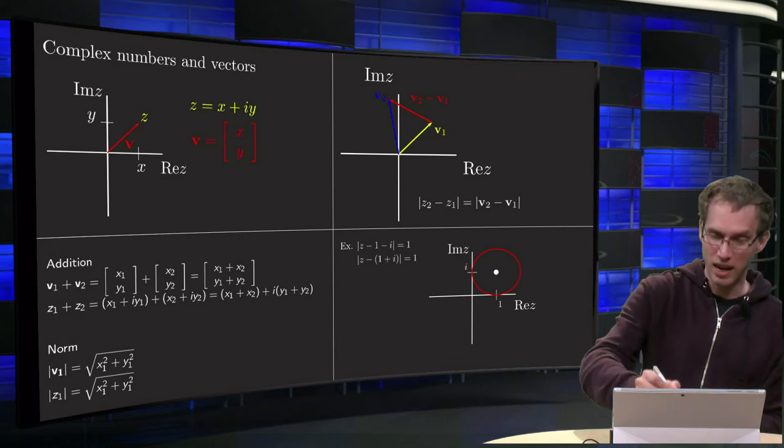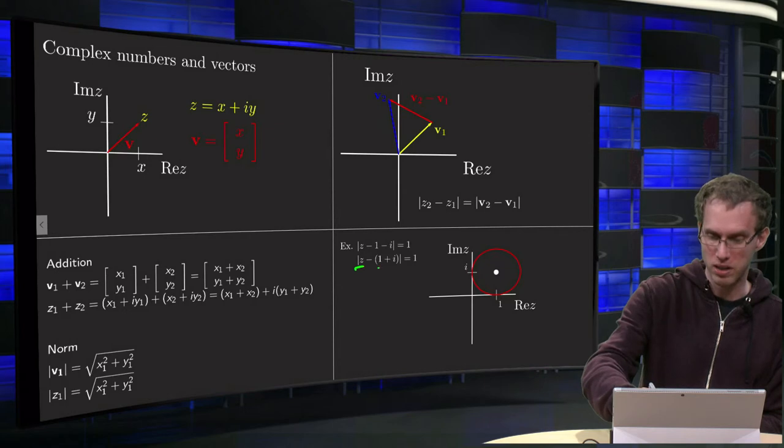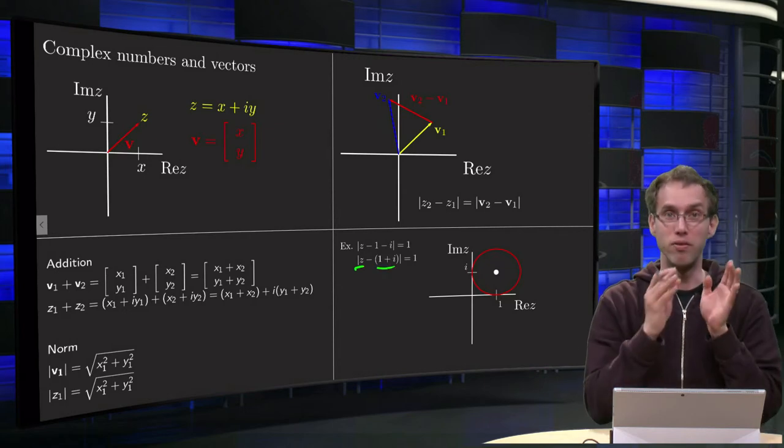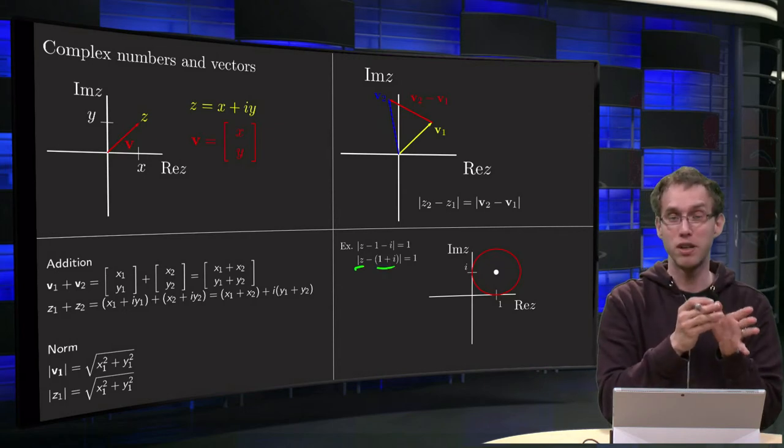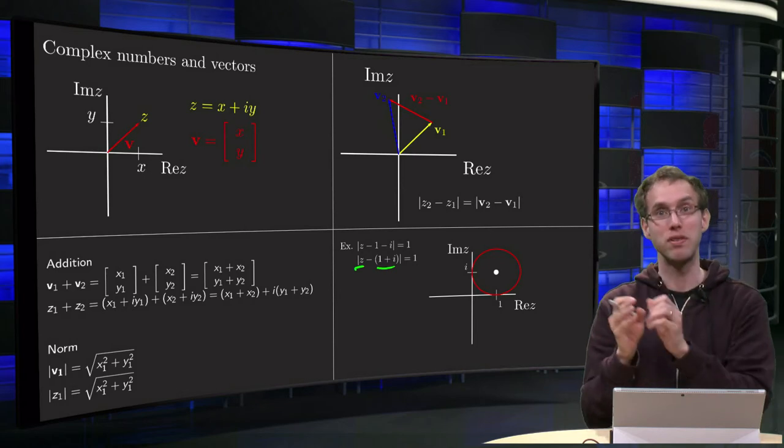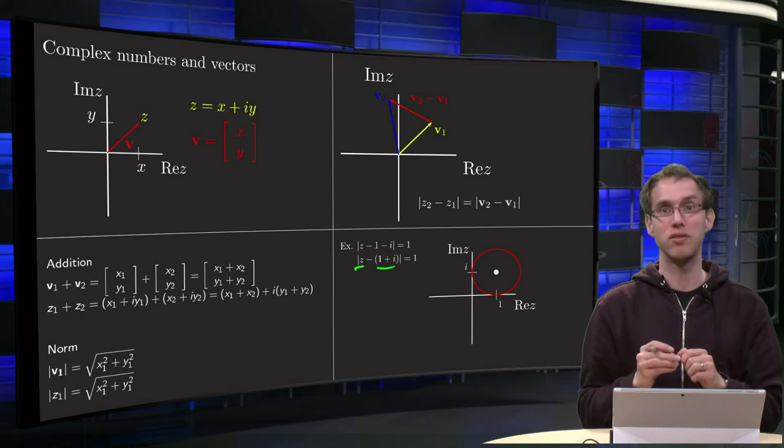You see, well, I can rewrite this as the norm of z minus 1 plus i, so variable z minus fixed complex number 1 plus i, and the difference of those norms equals exactly 1.